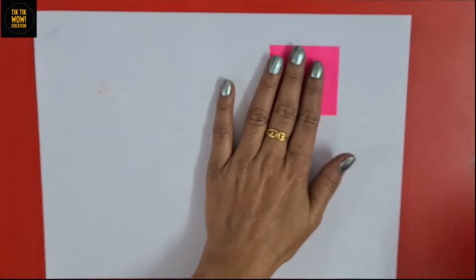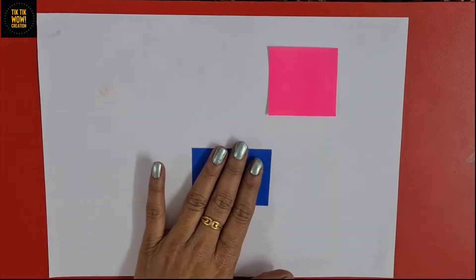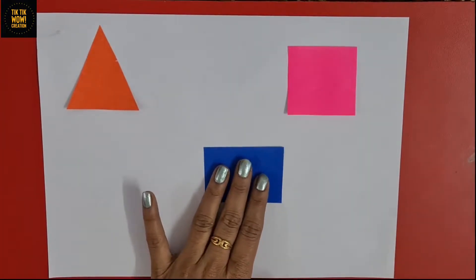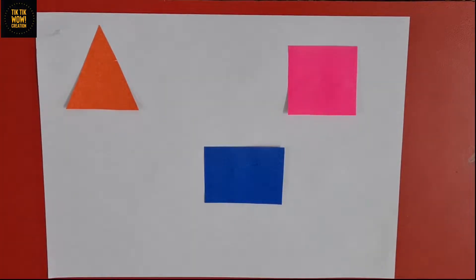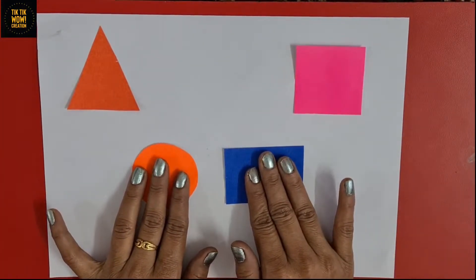So let's get started. For this activity, here we have some colorful cutouts of shapes. I am pasting a pink square, blue rectangle, red triangle, and orange circle.